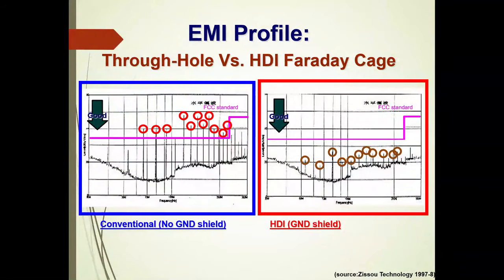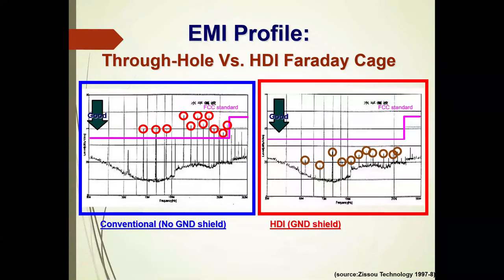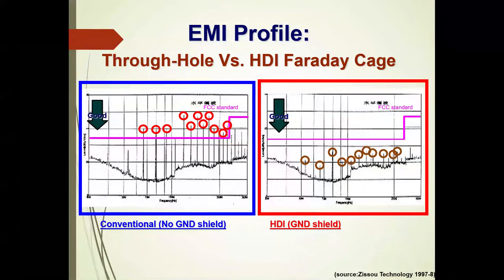EMI follows the same pattern. On the left, a conventional multilayer has EMI spikes that exceed the FCC standard. On the right, utilizing a ground shield flood on layer one — which we talked about in the last webinar — EMI is below the FCC standard, because the flooded ground plane acts as a Faraday cage in the design.